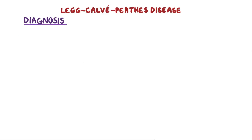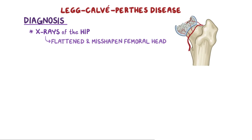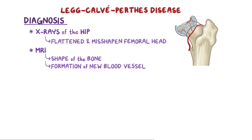Diagnosis of Legg-Calvé-Perthes disease mainly involves taking x-rays of the hip, which reveal a flattened and misshapen femoral head. In addition, an MRI can be done to see the shape of the bone, as well as look for the formation of new blood vessels.